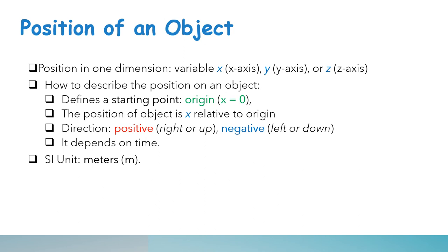You should also define a starting point, and usually we choose the origin where x is equal to zero. Take note that the position of x is relative to the origin. The direction has a positive sign if it's going to the right, east, up, or north, while the direction has a negative sign if it's going to the left, west, down, or south.